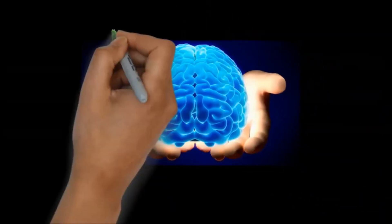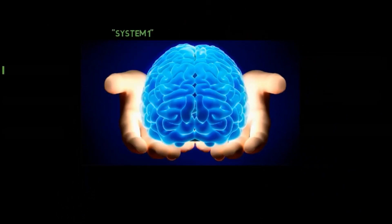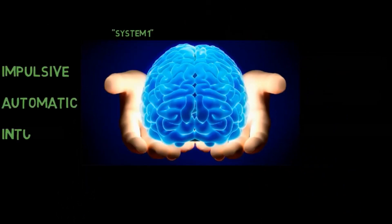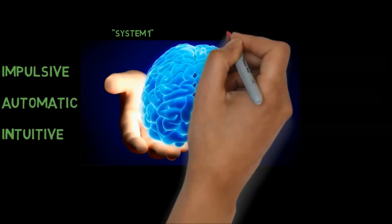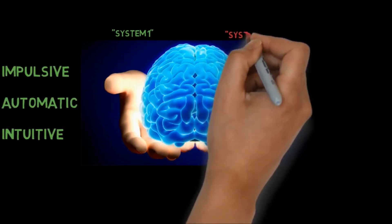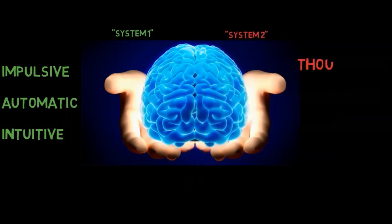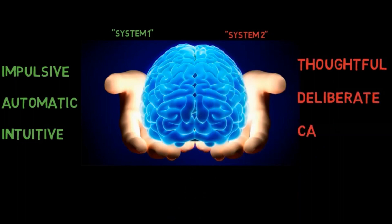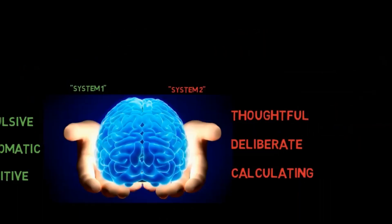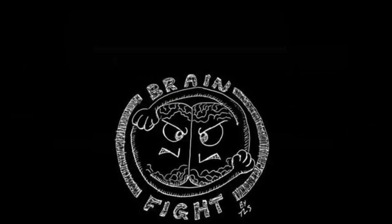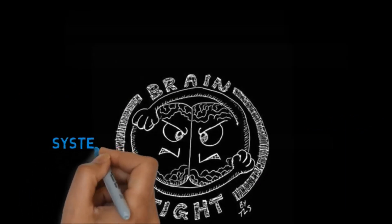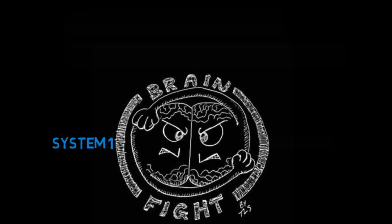System 1 operates automatically and quickly, with little or no effort and no sense of voluntary control. System 2 allocates attention to the effortful mental activities that demand it, including complex computations. The operations of System 2 are often associated with the subjective experience of agency, choice, and concentration.